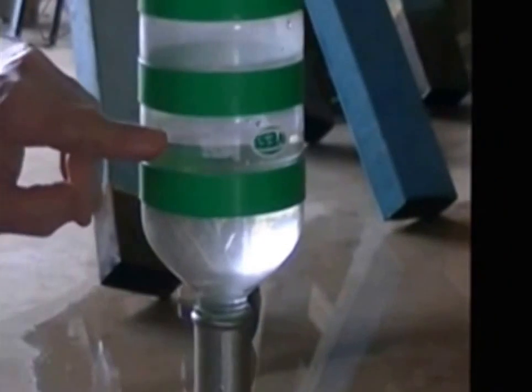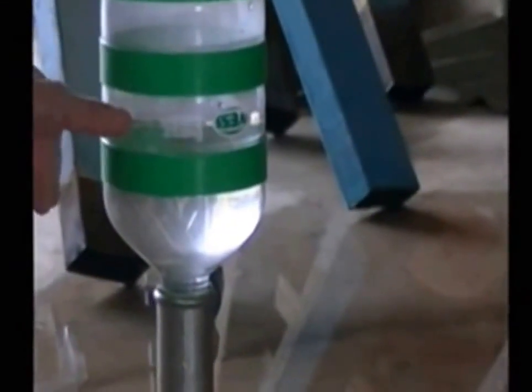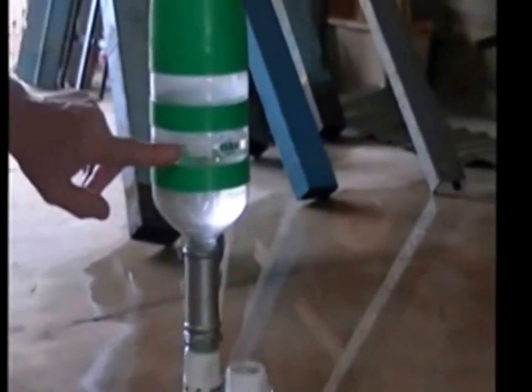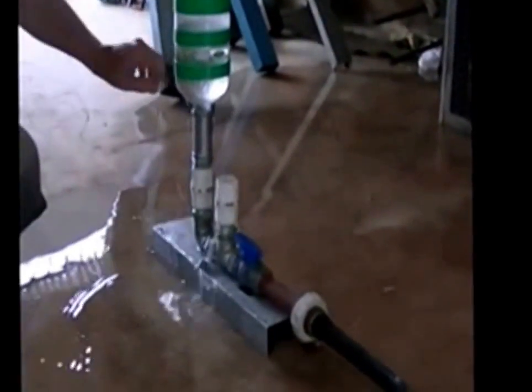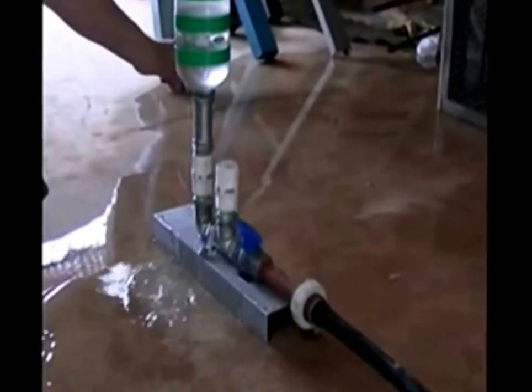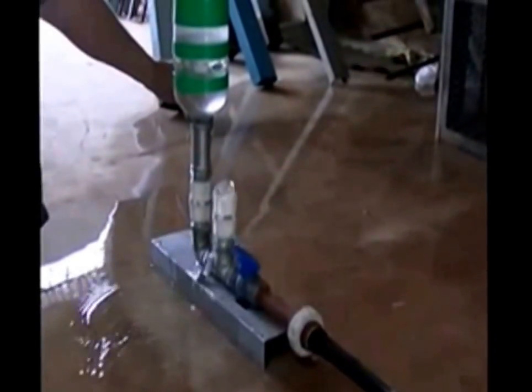When the ram operates for a while, there will come a moment when this height won't rise anymore. That means it's at its maximum operating pressure. At that moment we will open the outlet valve and see the total pressure generated.